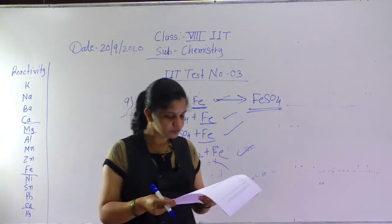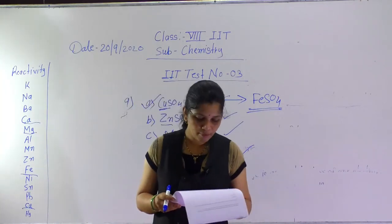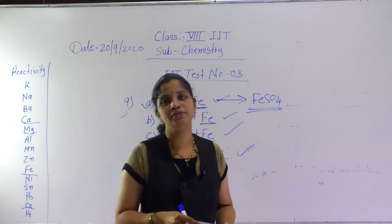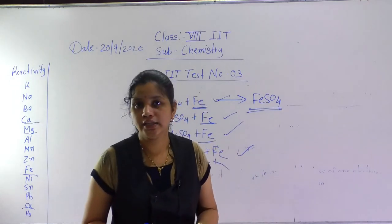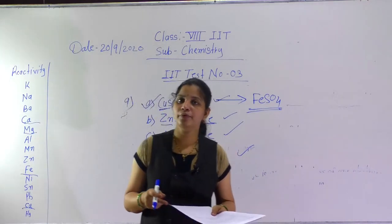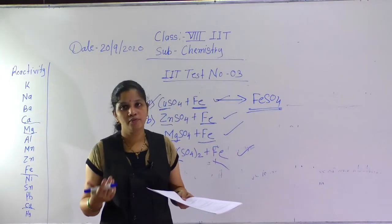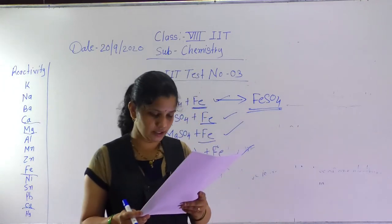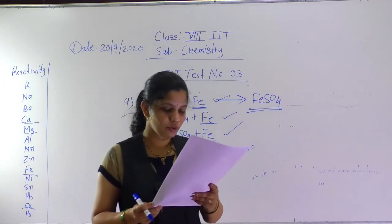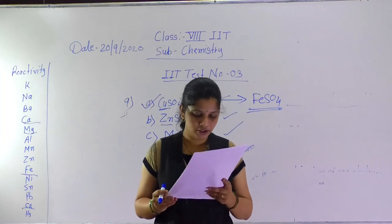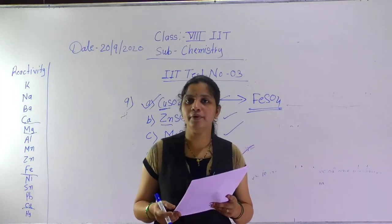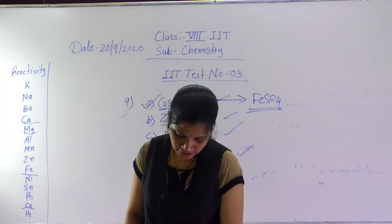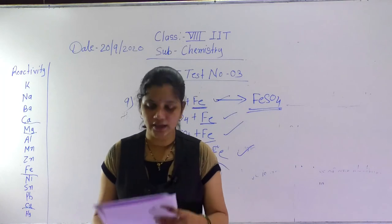Question number 12: common brass is an alloy of. An alloy is a mixture of more than one metal. Brass is an alloy of copper and zinc. Option C is correct.